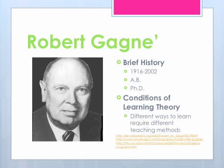Robert Gagne was born in Massachusetts in 1916. He earned a bachelor's degree from Yale in 1937 and a Ph.D. from Brown in 1940. With this education and knowledge, he went on to teach psychology and educational psychology at various universities across the United States. He also worked as a research director for the Air Force and was employed as a consultant to the Department of Defense and the U.S. Office of Education. His research changed education as well as military training.